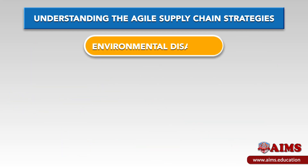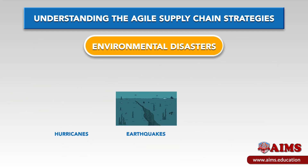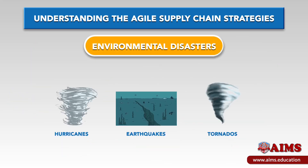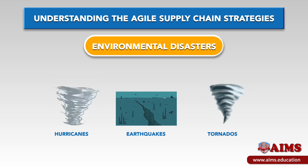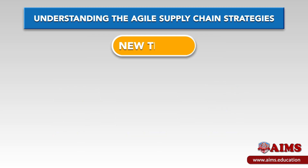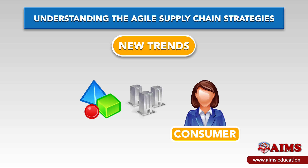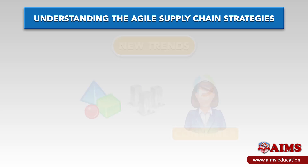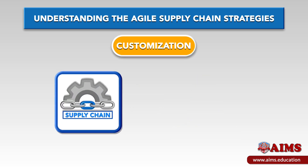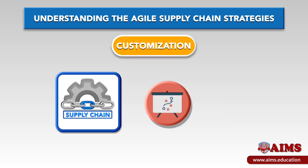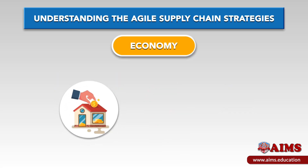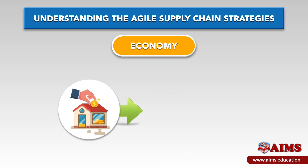Environmental disasters — hurricanes, earthquakes, tornadoes, and other weather changes. New trends: a new toy on the market can change consumer demand quickly. Customization: adapting supply chain strategies to your company. And economy: changes in economic conditions that affect customer spending.